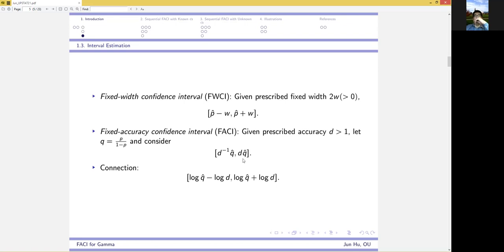we consider q hat over d to q hat times d. If we take the logarithm, we obtain log of q hat plus or minus log of d, which is a fixed width confidence interval for log of q. So, there's a connection between these two confidence intervals.